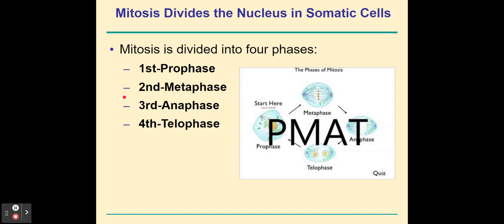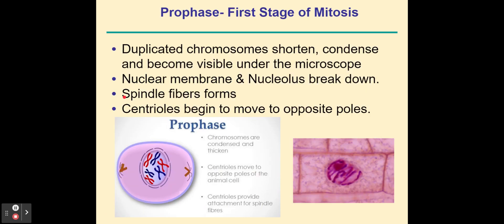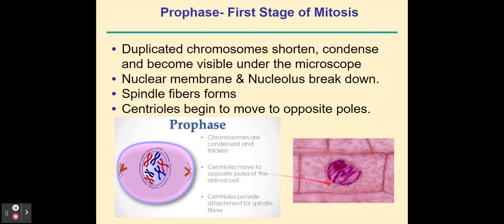Now we enter mitosis — division of the nucleus in body cells, or somatic cells. The stages are abbreviated PMAT: P for prophase, M for metaphase, A for anaphase, and T for telophase. In prophase, our duplicated chromosomes start to shorten, thicken, and condense — they become visible under the microscope. The nuclear membrane and the nucleolus break down, spindle fibers start to form, and the centrioles begin to move to opposite sides of the cell. In the animated prophase, the orange rectangles represent centrioles, the black lines represent spindle fibers, and the dashed blue line represents the nuclear membrane breaking down, as chromosomes become visible.